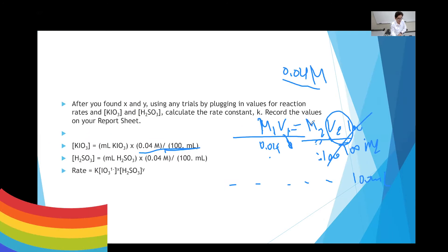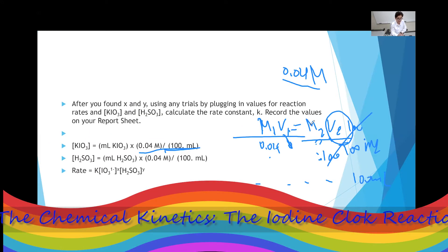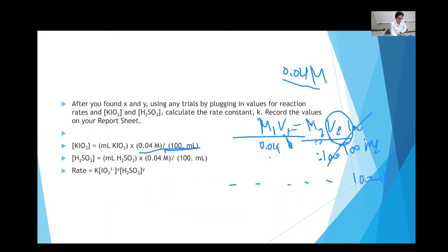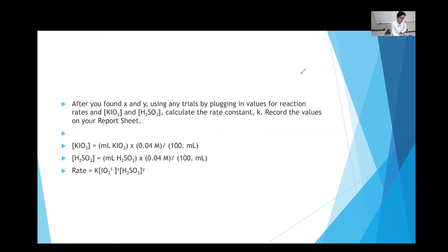Experiment two for sulfurous acid uses the simple concept of M1V1 = M2V2. The total volume you are using is 100mL, and 0.04 is the initial concentration in the burette as you are adding milliliters of sulfurous acid or milliliters of potassium iodate that is given in the table.